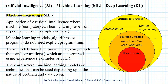Machine learning is an application of artificial intelligence where the machine or computer can learn and improve from experience. These experiences consist of examples or data. Machine learning models or algorithms do not need explicit programming. Rather, these models have free parameters, and the number of free parameters can go up to thousands or millions. These free parameters are determined using examples or data.